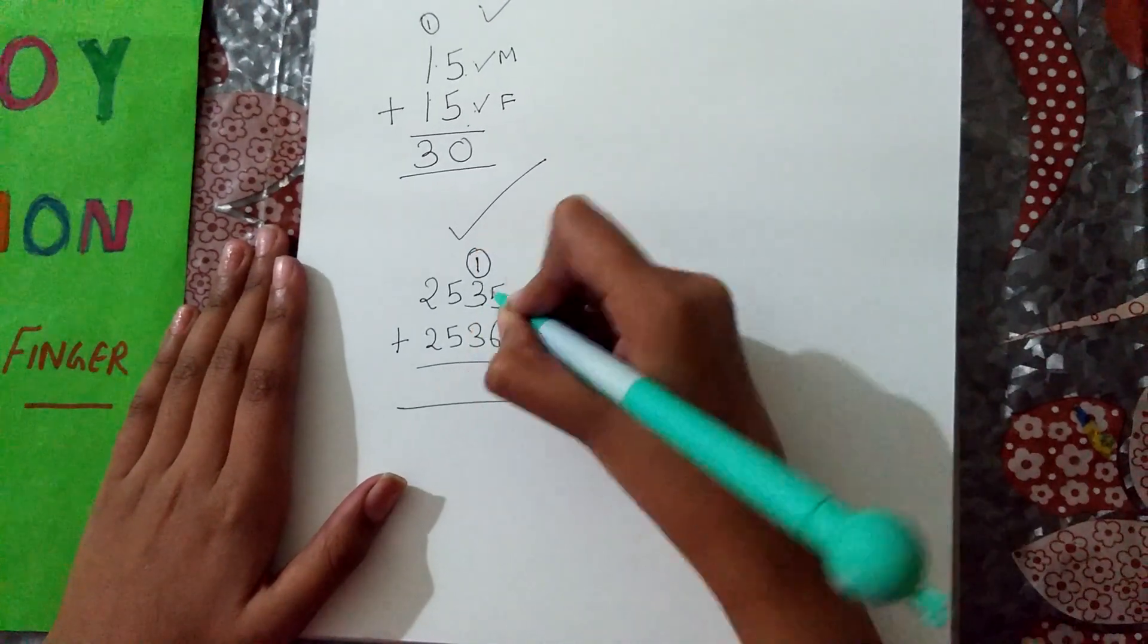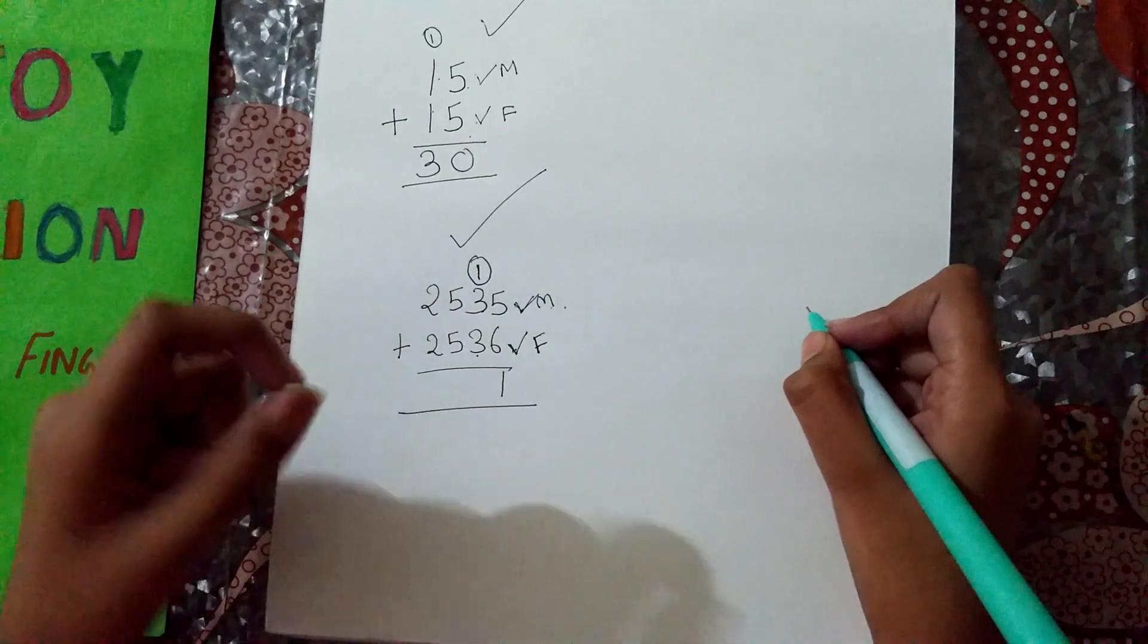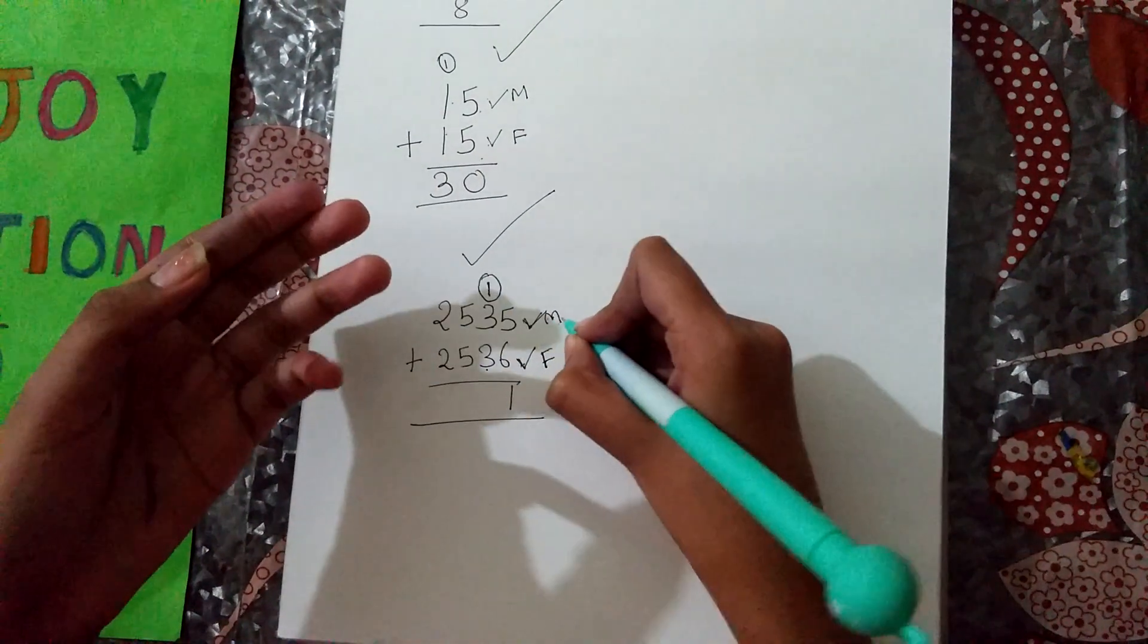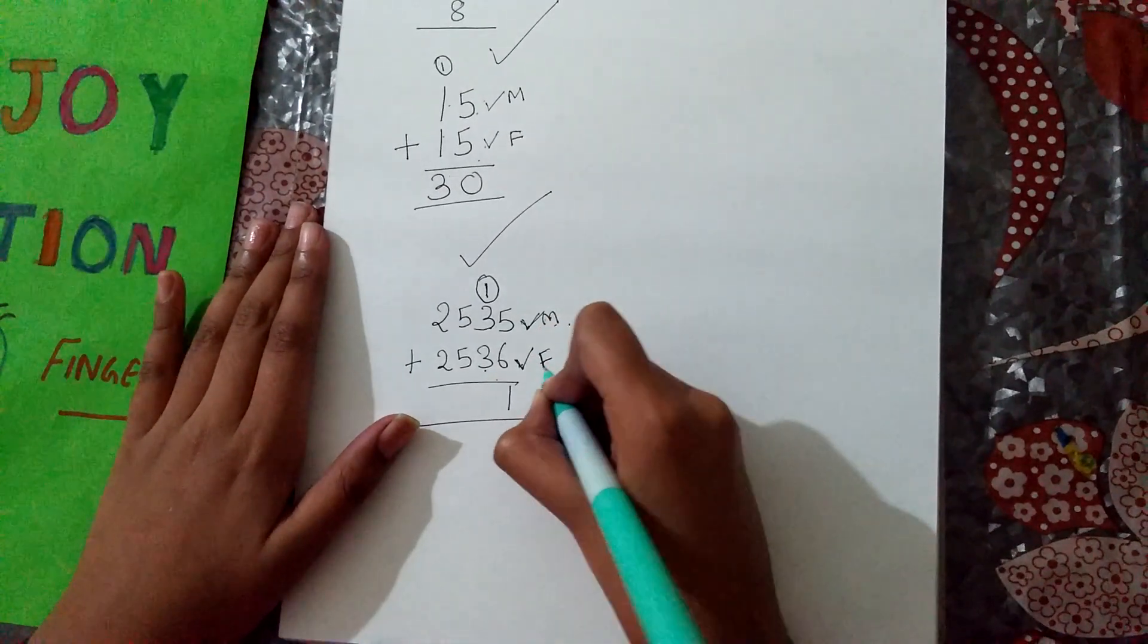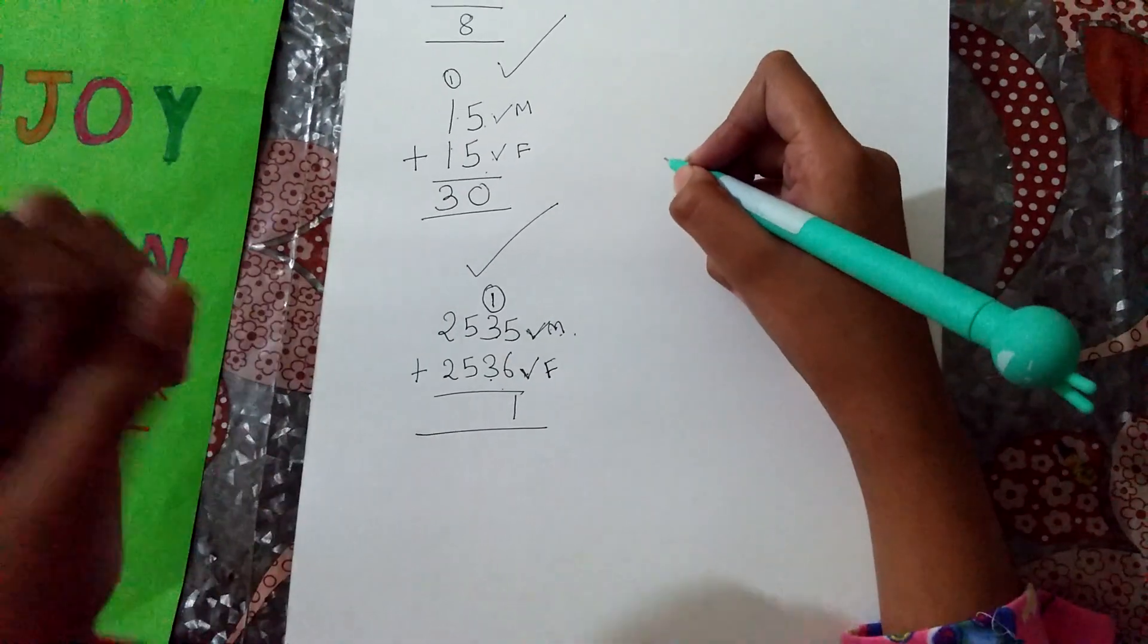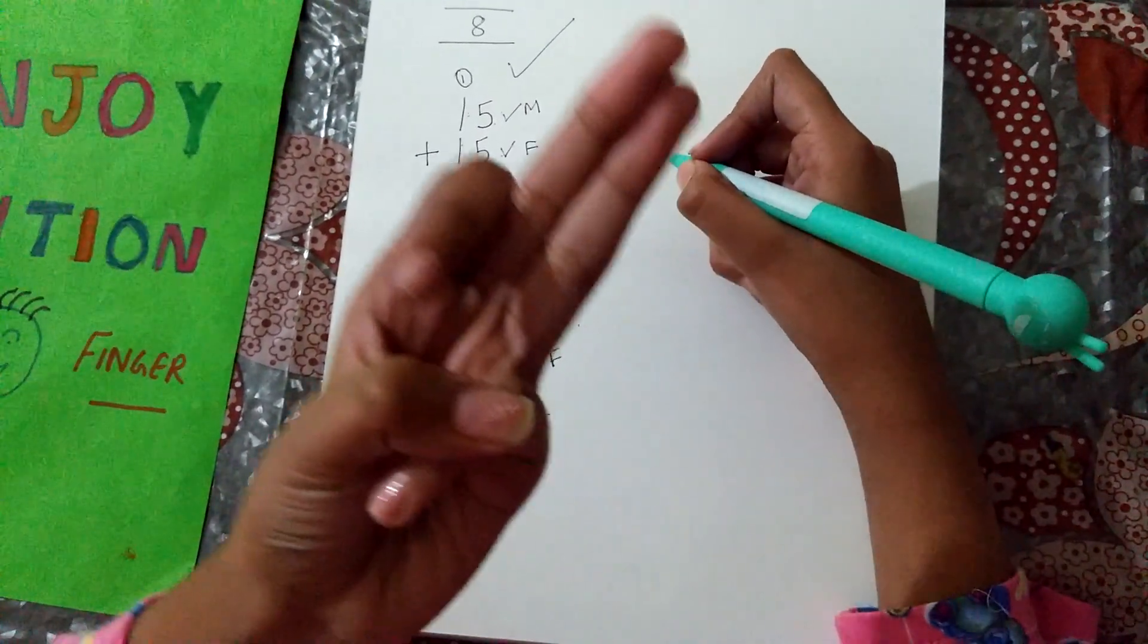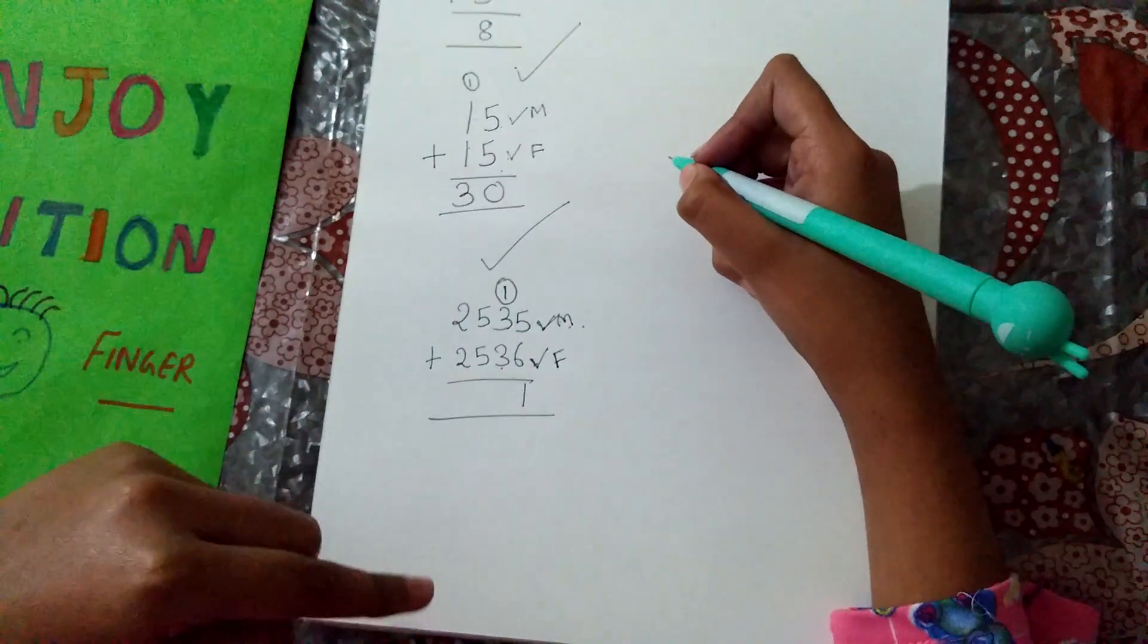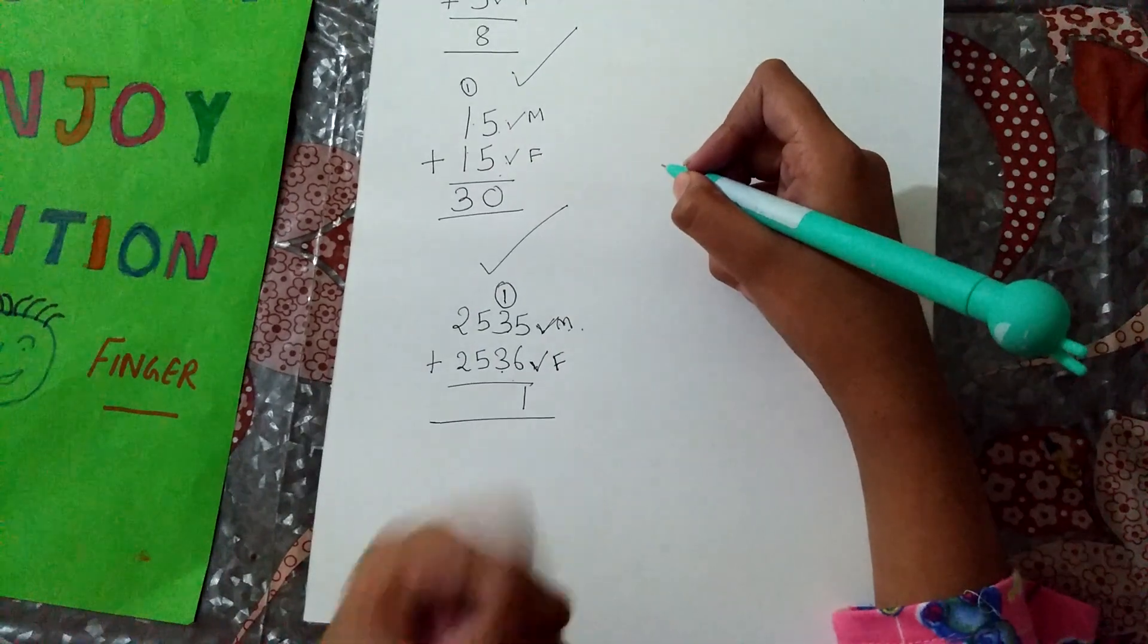Now, let's take 3 plus 3. You know that the upper one is in the mind and the lower one is in the finger. After 3, 4, 5, 6. Carry forward plus 1, 6 plus 1, 7.